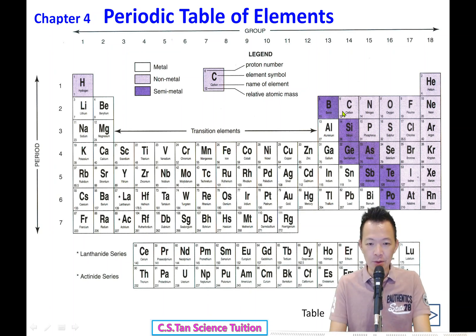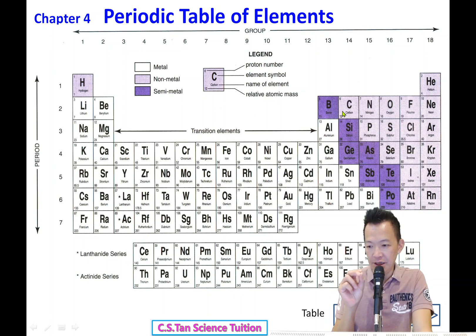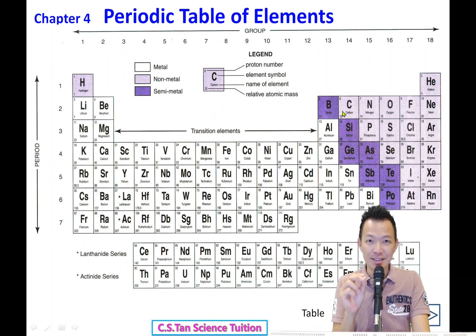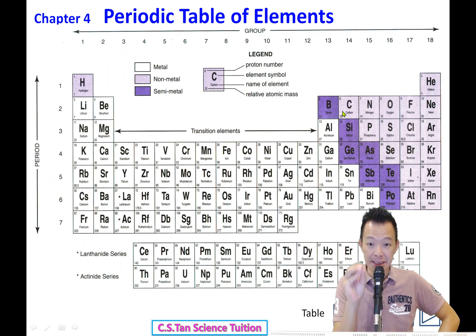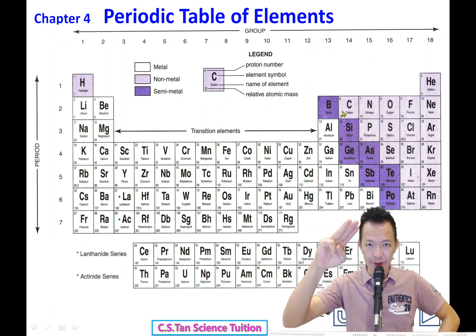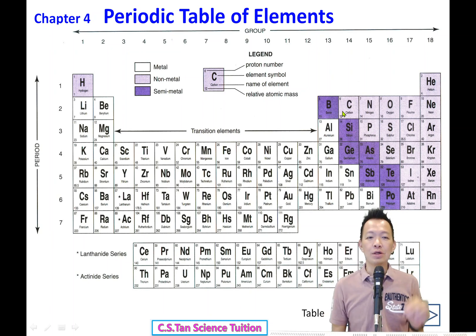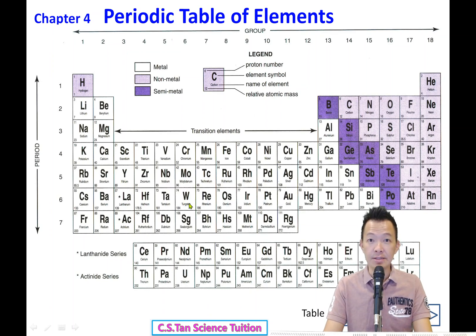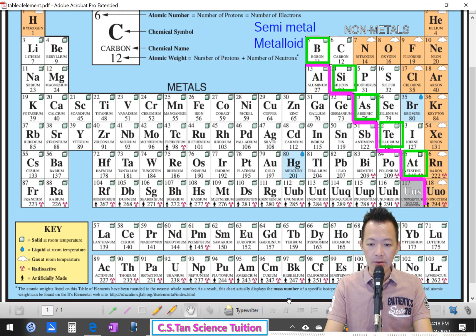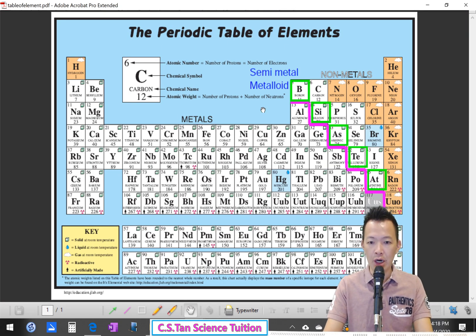Ok, we start. Our title: Chapter 4. Maybe we start a little bit. Sorry, I forgot to look at the camera - I was just looking at my own computer. Ok, our title Chapter 4: Periodic Table of Elements, or in Chinese, 元素周表. You have this table in your notes as well.